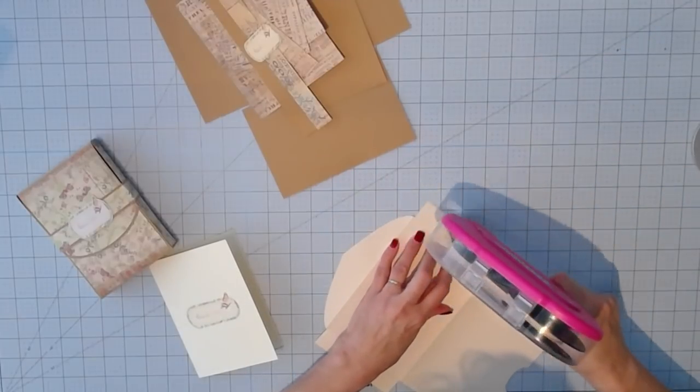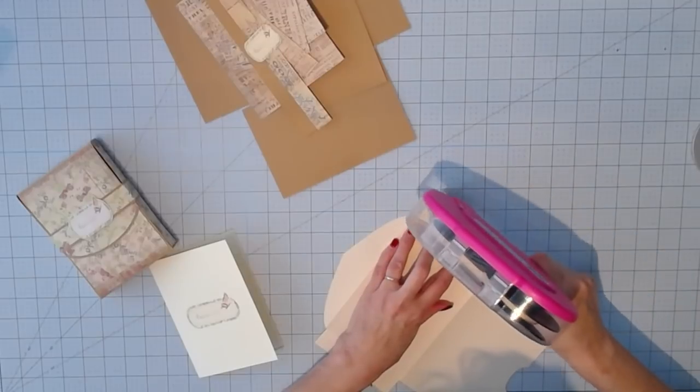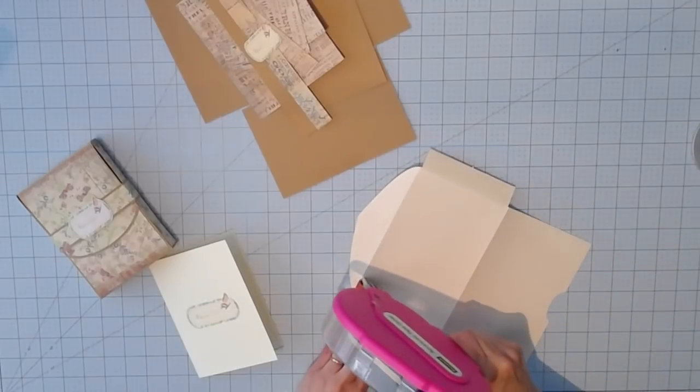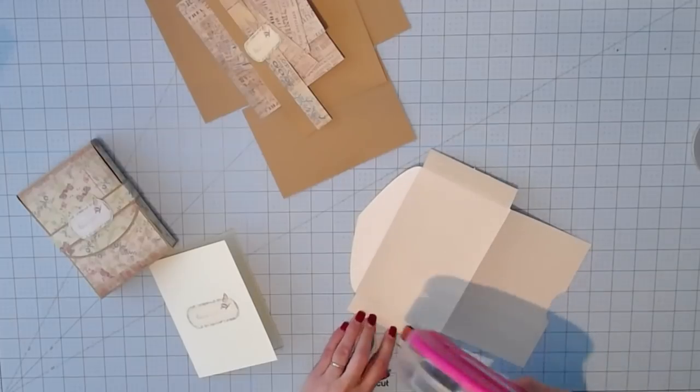Once you've folded all your score lines, just apply adhesive or tape runner to the outside tabs and assemble your envelope.